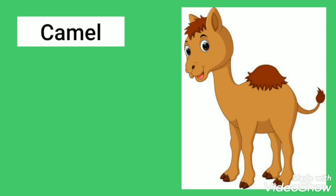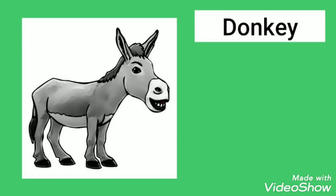Camel is used for transportation — sometimes we also ride on its back. That is why camel is known as the ship of the desert. A donkey is known as the beast of burden and helps us by carrying heavy loads on its back from one place to another.